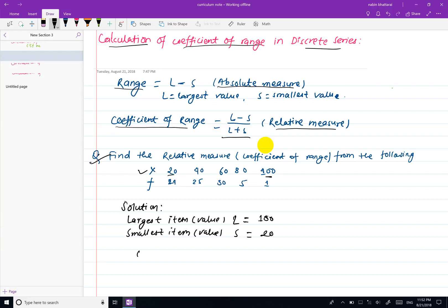The coefficient of range equals 100 minus 20 divided by 100 plus 20, which is 80 divided by 120, which equals 0.667.